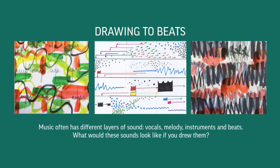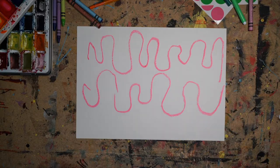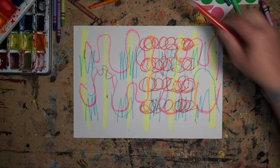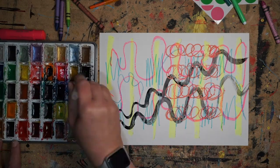Polyphonic music means music that has a range of different sound elements that make up the piece of music. Music often has different layers of sounds that can include the vocals, melody, different instruments and beats through percussion or electronic effects. What would these sounds look like if you drew them? Find a piece of music you love and listen to it in different ways. For each layer of sound, draw how you think the sound might look on a page — maybe dots, squiggles, shapes, flashes, scribbles for example.